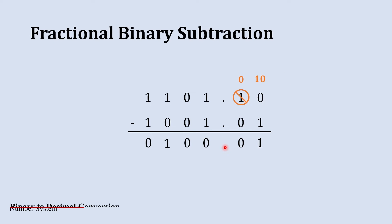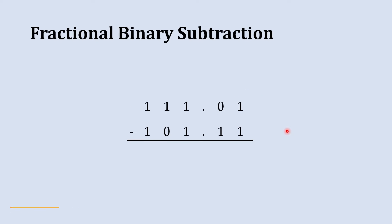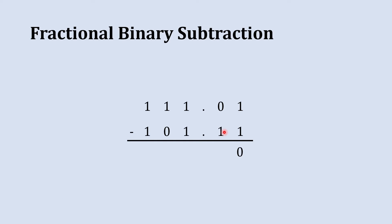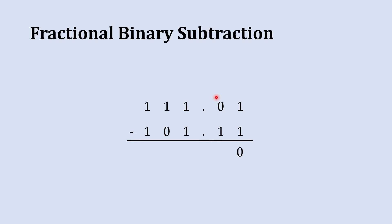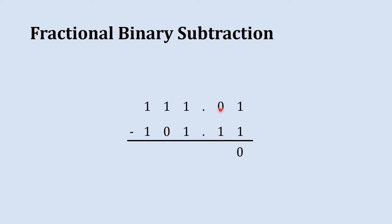Now we will go for a slightly more complex subtraction. We start with the rightmost column: 1 minus 1 gives 0. Next, we try to subtract 1 from 0, which is not possible. So we jump to the next column to borrow. Note that even though there is a binary point between these two columns, the magnitude of the integer column is still two times higher than the fractional column.